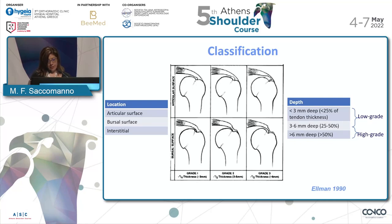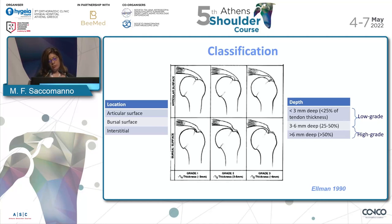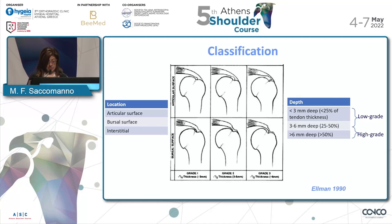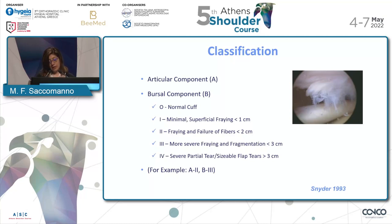We talk about high-grade and low-grade, but we don't fully know the significance yet. Besides articular, bursal, or interstitial location, a more common classification for imaging and especially in the arthroscopic field is the Ellman classification, which is quite old but still usable. It defines not only location but also the thickness of the tendon involved. Low-grade tears involve less than 25% or less than 50% of tendon thickness; high-grade tears involve more than 50%. Another useful arthroscopic classification is the Snyder classification, which involves articular and bursal components with subtypes for tendon thickness involvement.